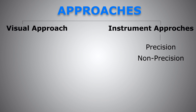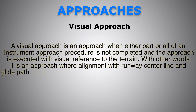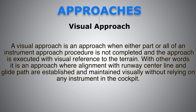Precision approach, non-precision approach, and last but not least, the most confusing and controversial APV — approaches with vertical guidance. Now let's look at each one individually in a bit more detail, starting with visual approach. A visual approach is an approach when either part or all of an instrument approach procedure is not completed, and the approach is executed with visual reference to the terrain or to the airfield. In other words, it is an approach where alignment with the runway centerline and the glide path are established and maintained visually, without any instrument in the cockpit.